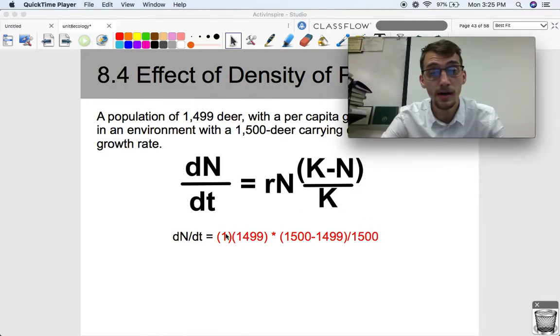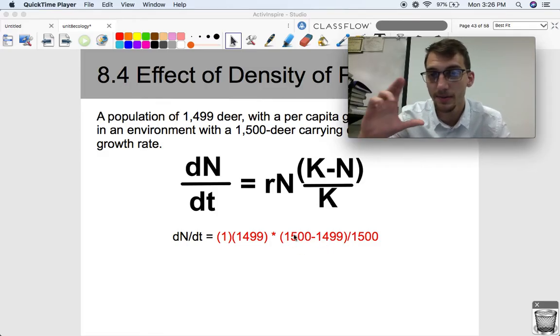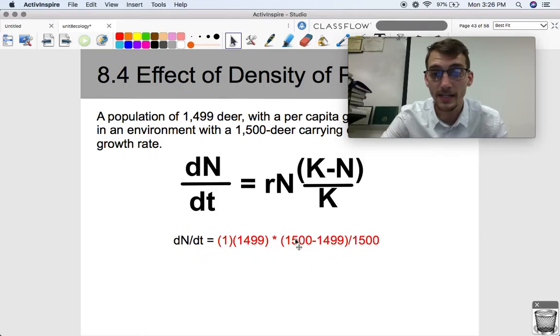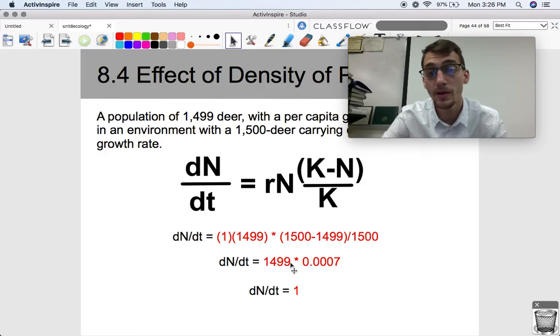Well, if we put in the same thing as before, 1 times 1,499 times this thing in the parentheses, 1,500 minus 1,499 divided by 1,500, we put that all into our calculator, follow order of operations, and what we're going to eventually get is that it's 1.